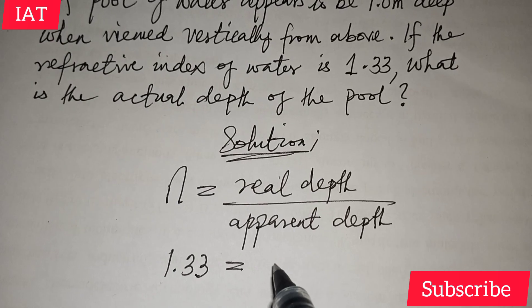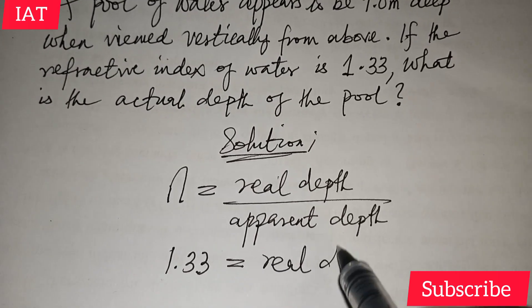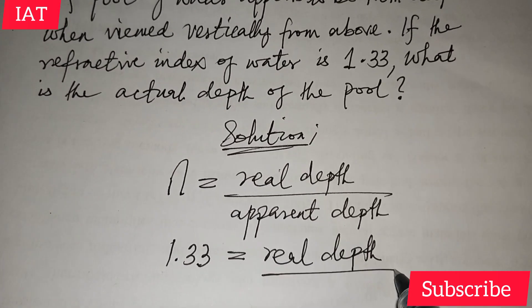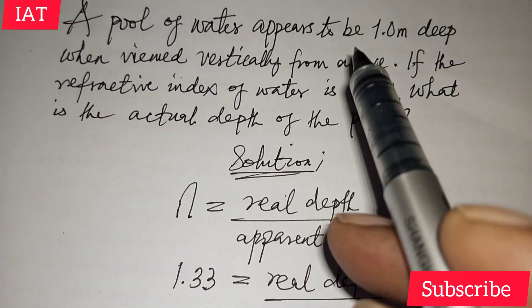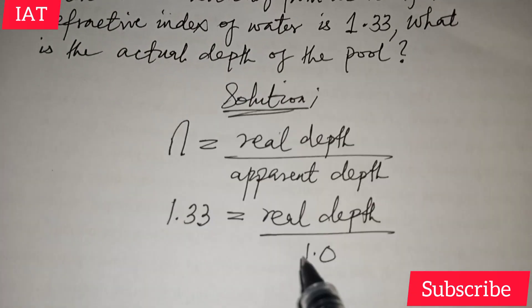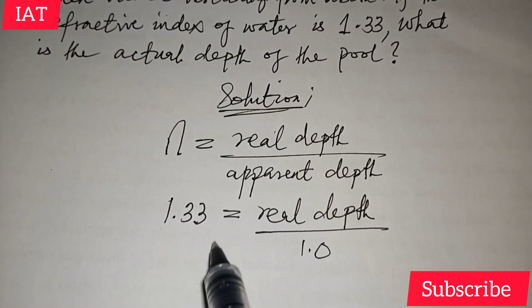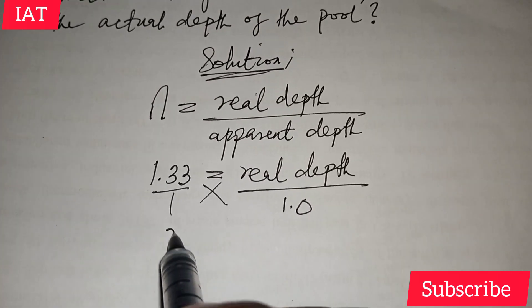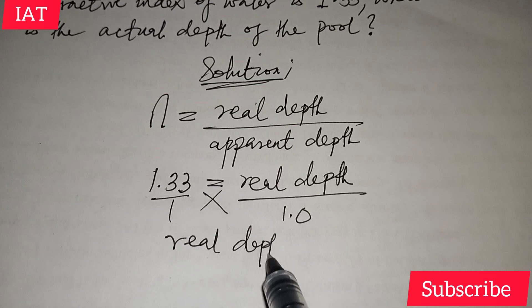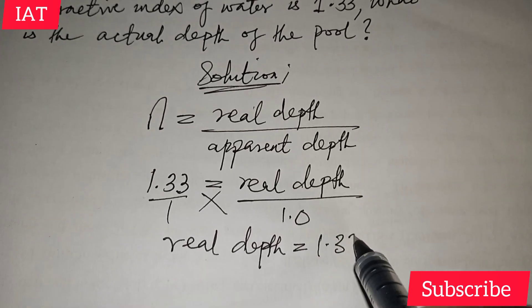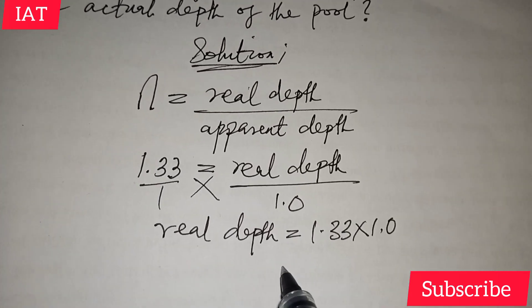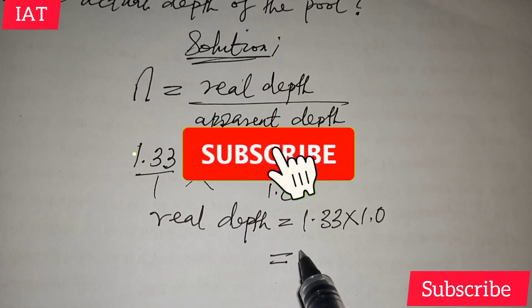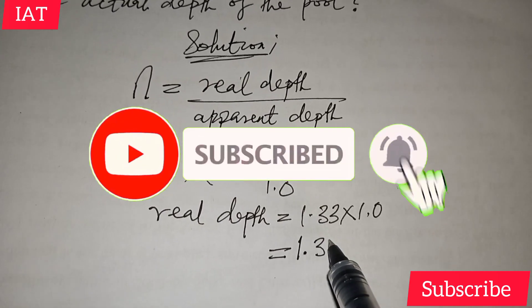So what we need to do is rearrange to solve for real depth, using the apparent depth value of 1.0. By cross multiplying, we have that real depth equals 1.33 times 1.0, and the result will be 1.33 meters.